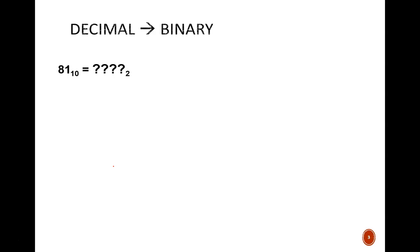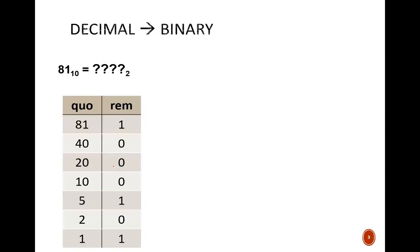Next one, we're flipping things around, given decimal convert to binary, and to do this, I use the repeated divide by 2 method. So the given number 81 is written in the top left corner of this table. I divide that by 2, and that gives me a quotient of 40 with a remainder of 1.